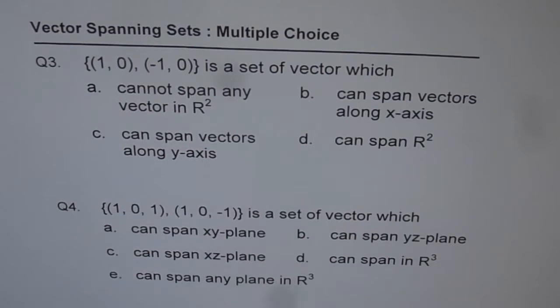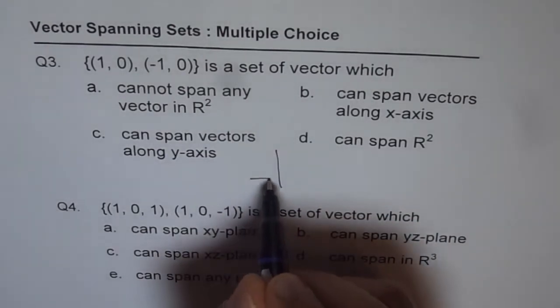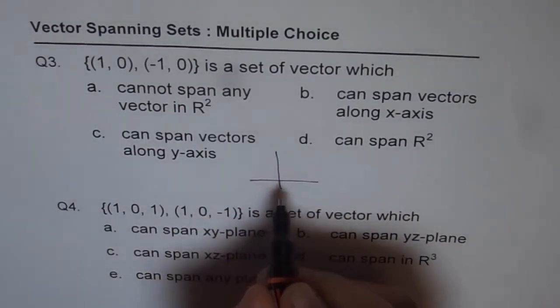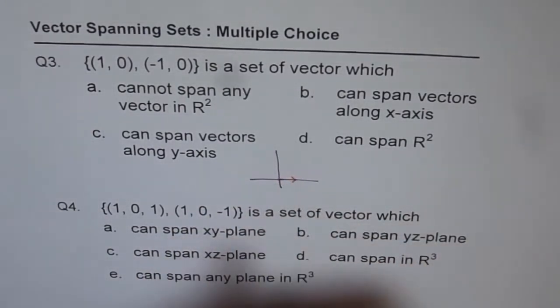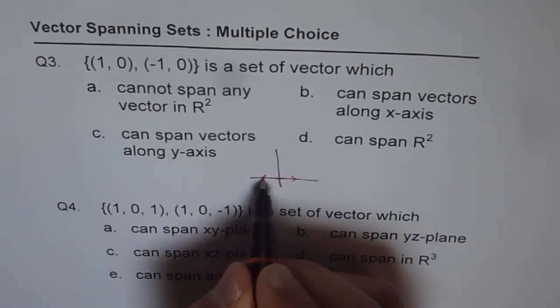So these are the four choices, what do you think? Well if you see, let me just try to show these vectors. The first one is (1, 0), that means the first one is along the x direction, right? The second one is (-1, 0), that is kind of like this.